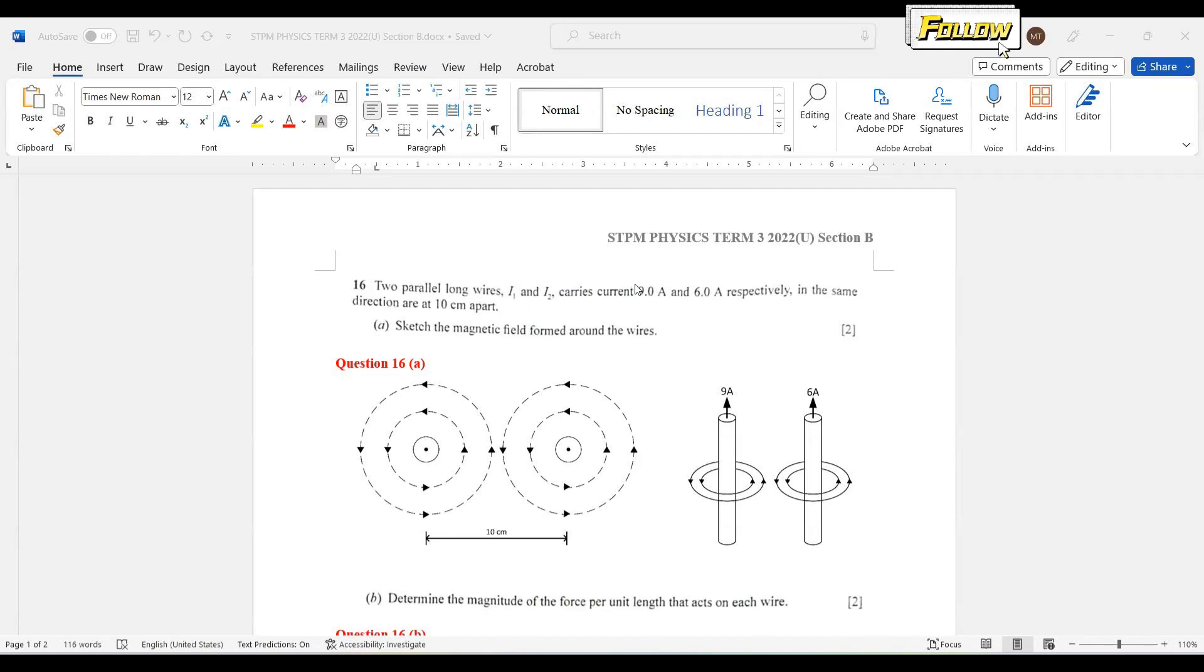We'll discuss question 16 of the Ulangan paper in 2022. Two parallel long wires, I1 and I2, carry current 9A and 6A respectively in the same direction. The keyword is same direction and they are 10cm apart.